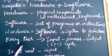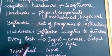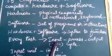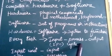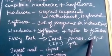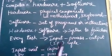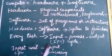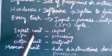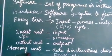If you want to perform a task, you use the IPO cycle — that is input, process, output. The functional components of a computer are: input unit, CPU, output unit, and memory unit.